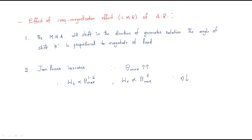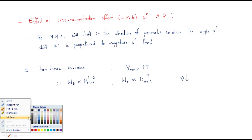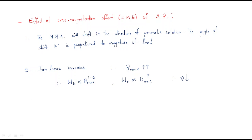In this session we will discuss the effects of cross magnetization due to armature reaction. There are three types: demagnetization, where the resultant flux decreases; magnetization, where the resultant flux increases; and cross magnetization, where the resultant flux neither increases nor decreases.